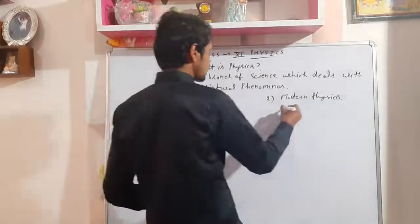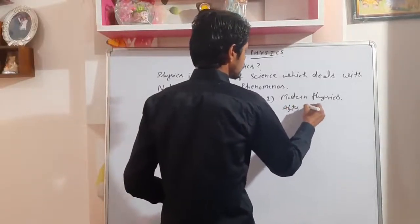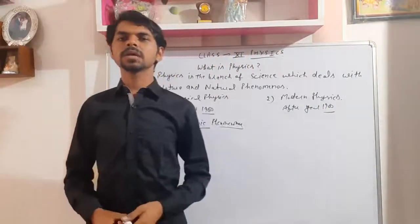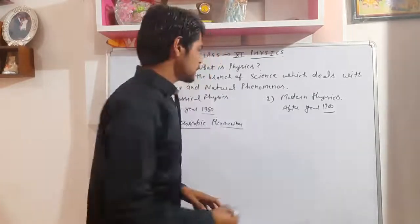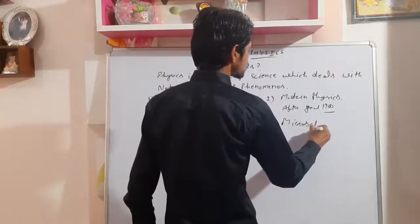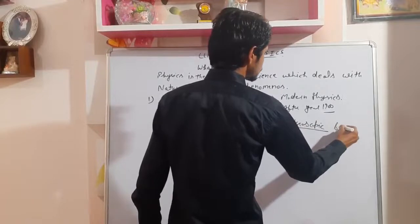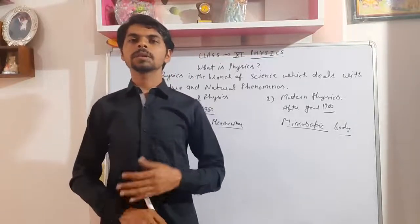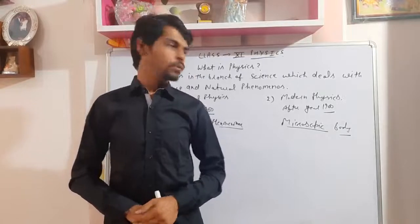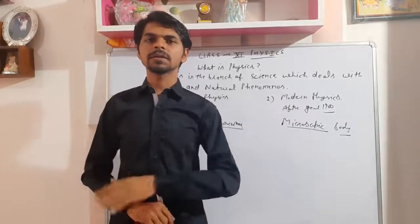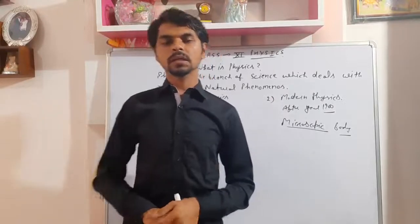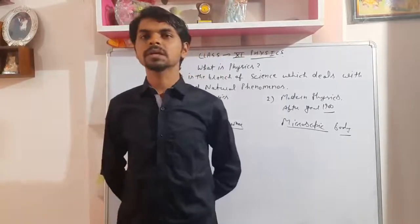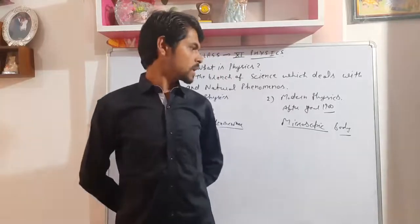The second type is modern physics. After the year 1900, the physics discovered is called modern physics, and this deals with microscopic bodies — very small sizes which cannot be seen with our naked eye. After 1900, physics focused on micro things like atoms and atomic structure. These are all micro-level things, and to understand micro-level things, modern physics was developed. So there are two types of physics: classical physics and modern physics.